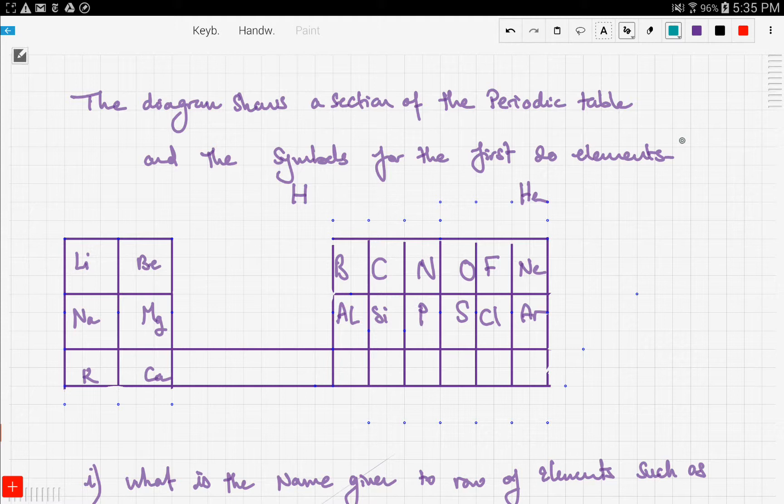a section of the periodic table and the symbols for the first 20 elements. So he gave you a periodic table but without numbers, only the symbols. We can number the atomic number of each: hydrogen is 1, helium 2, lithium 3, beryllium 4, and so on through 5, 6, 7, 8, 9, 10, continuing up to